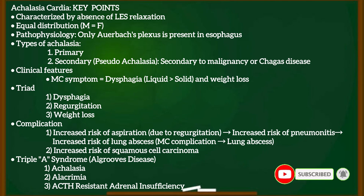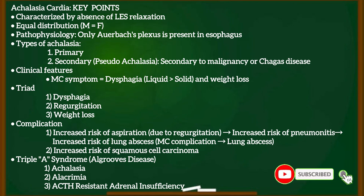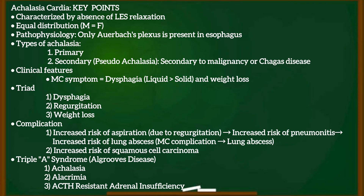Achalasia cardia is characterized by absence of LES relaxation. It is equally distributed between male and female. Regarding pathophysiology, only the Auerbach's plexus is present in the esophagus. There are two types of achalasia: primary and secondary. Secondary is known as pseudo-achalasia because it is secondary to malignancy or Chagas disease.